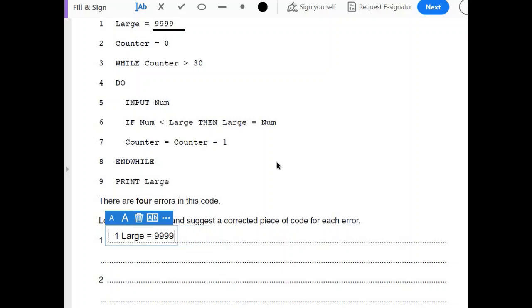You can write it like this as well, or you can write it in form of a statement as well. Line 1 is wrong, it should be Large equals 0. Again, there are different ways of solving this. It's fine how you write your answer, just make sure that as it says locate these errors and suggest a corrected piece of code, that means you have to first of all write the wrong piece of code and then you have to suggest the correction. Or you can simply write line number 1 has an error, it should be counter equals 0.